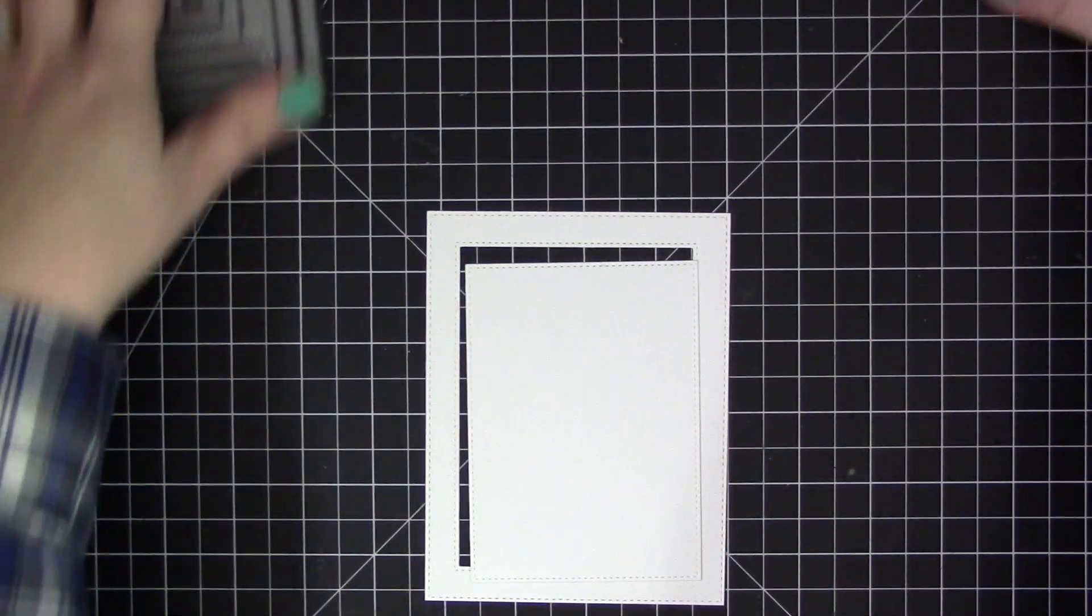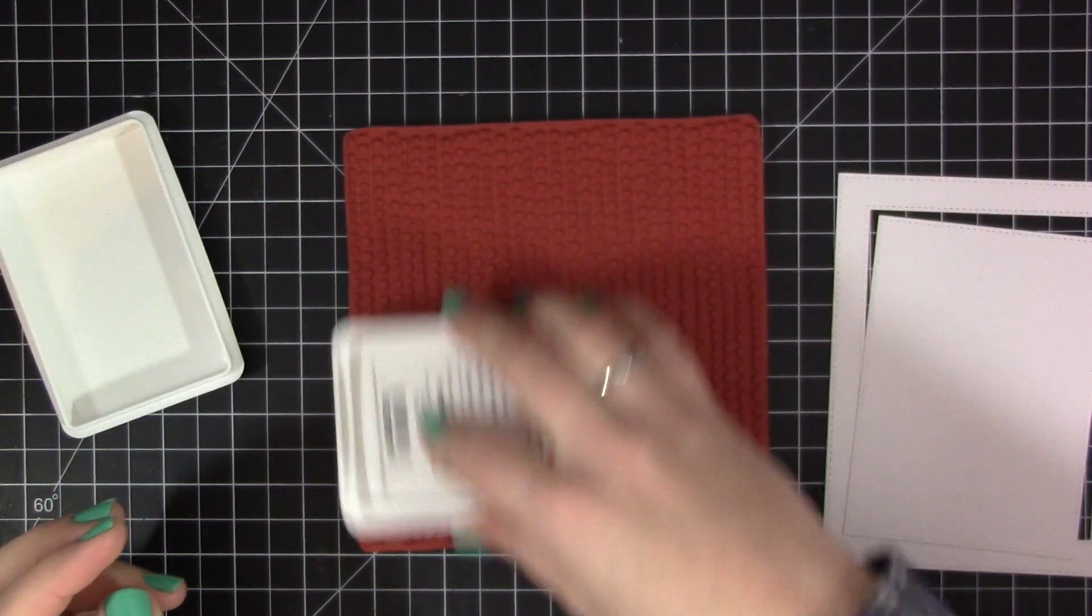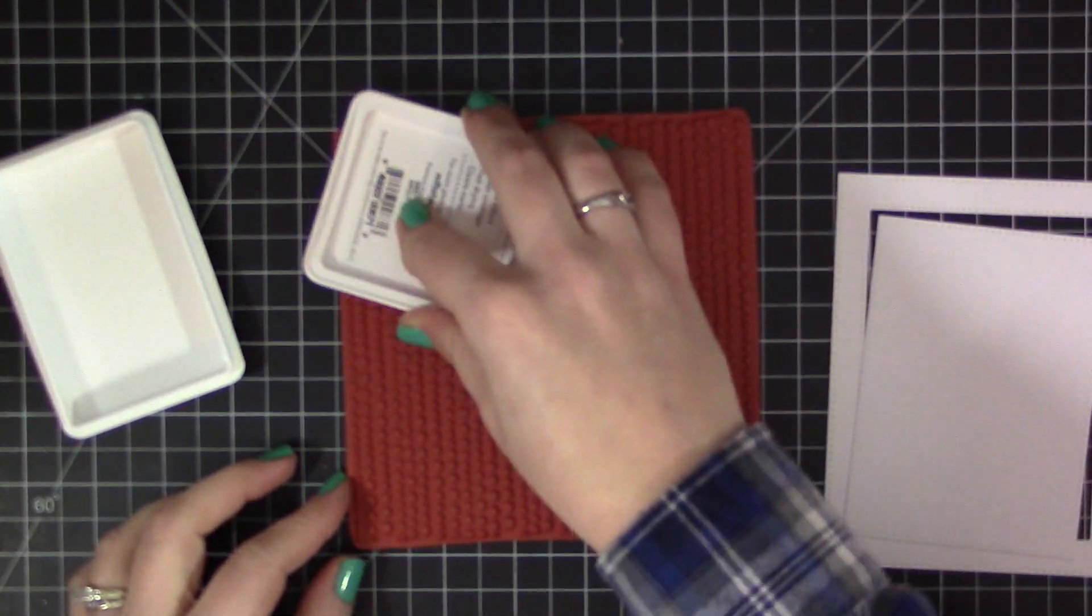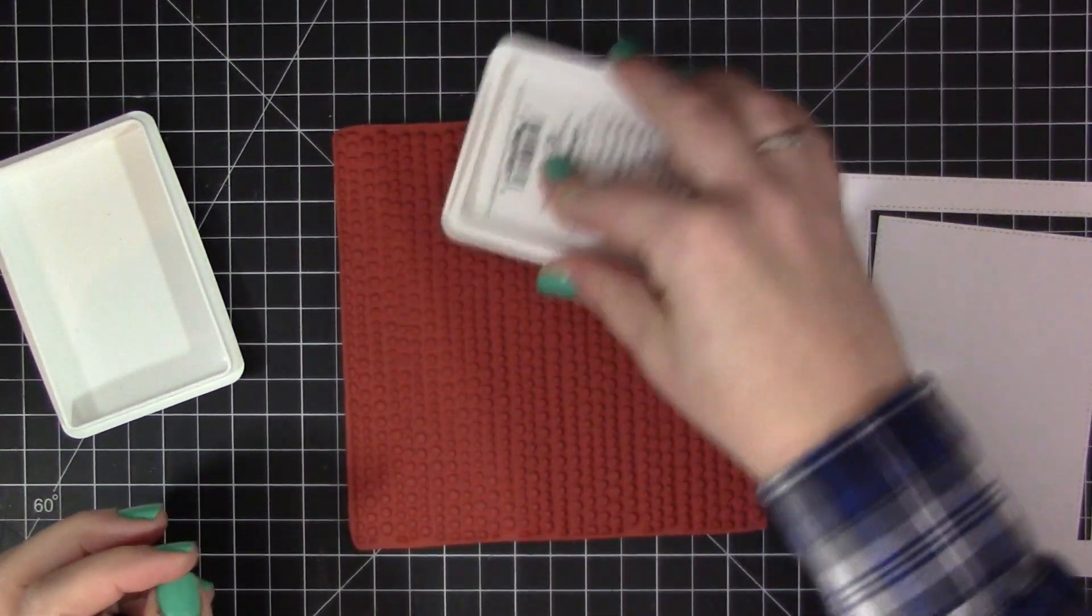For this card I'm actually going to use both pieces and we're going to assemble them together to create a dimensional frame on the outside of the card and use the stitched inside panel for the inside area of the card.